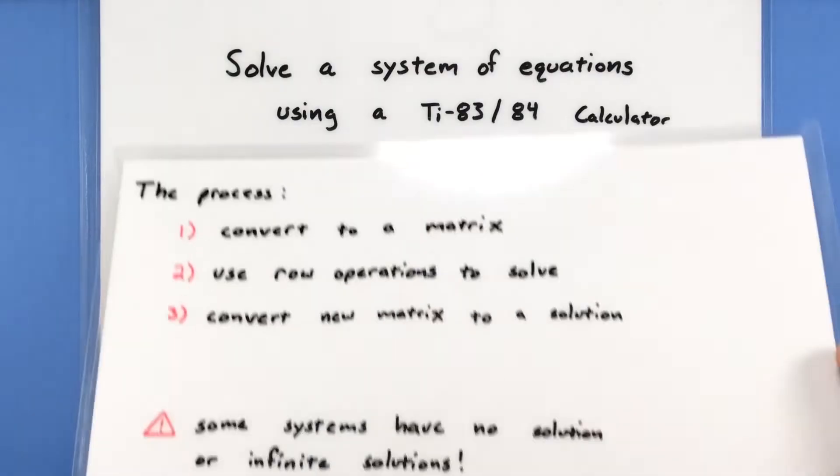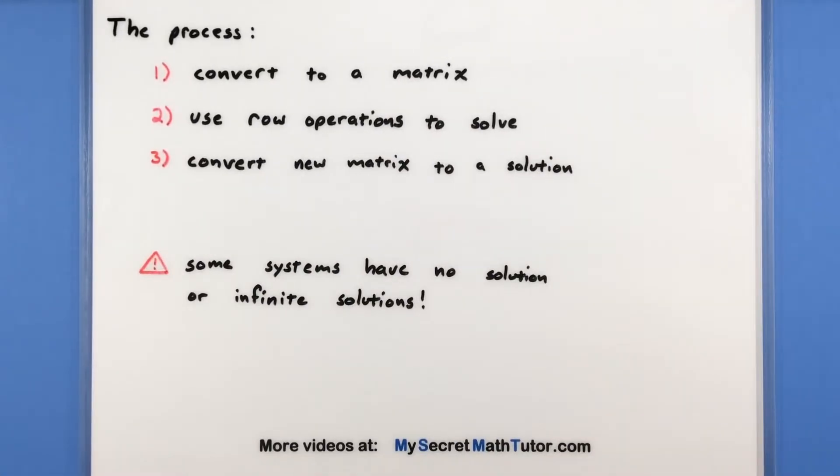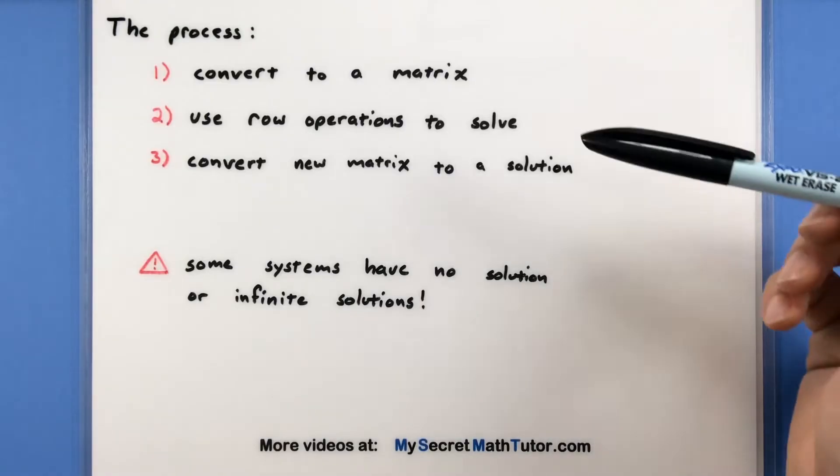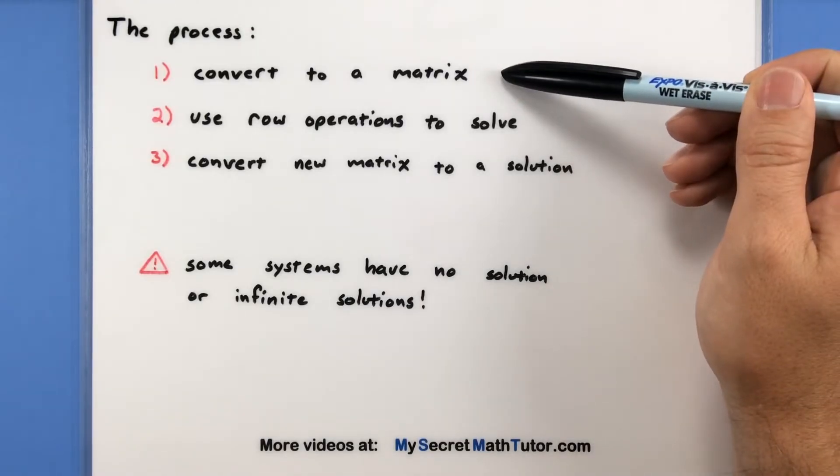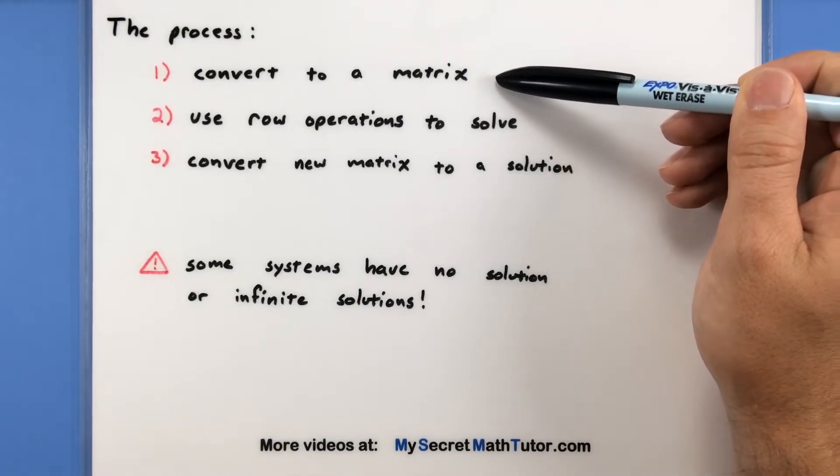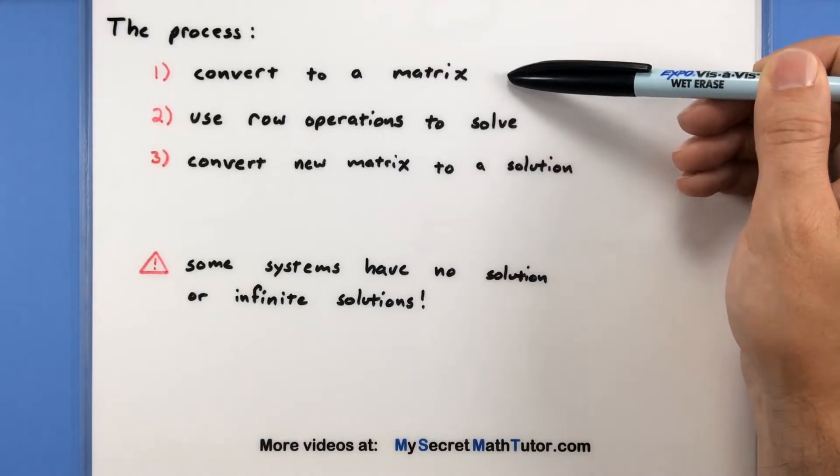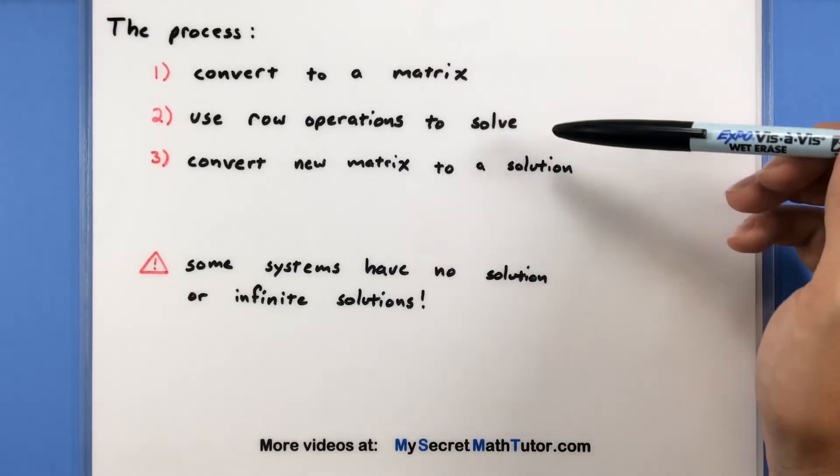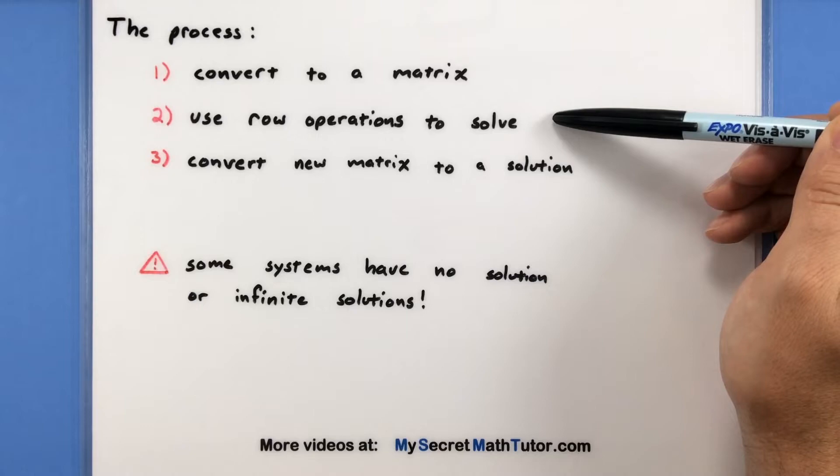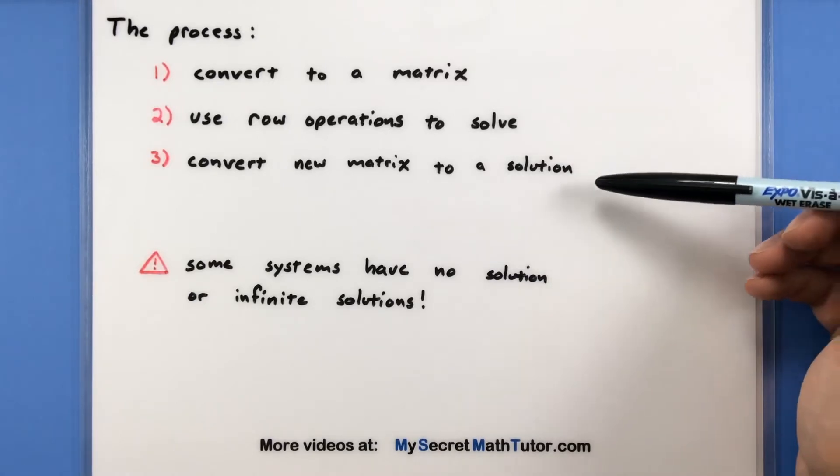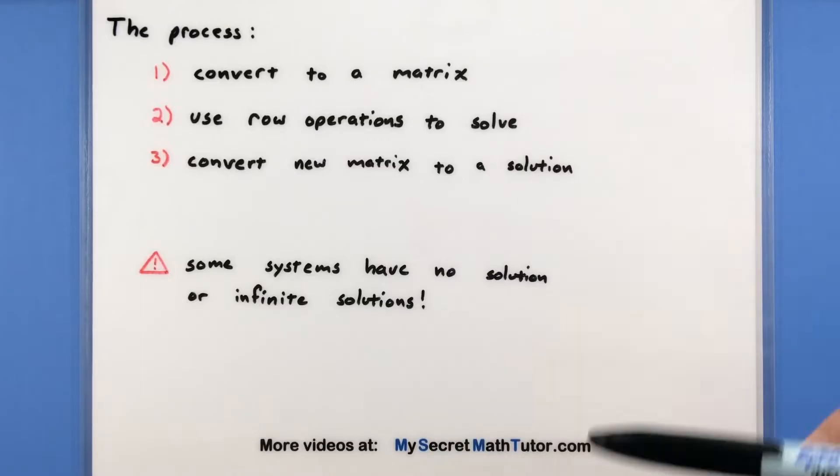If you recall, the process of solving a system of equations using a matrix, or a calculator for that matter, is to convert it into a matrix. This will be handy for the calculator because this is how we have to enter it in. Where the calculator comes in handy is it's going to be doing all of our row operations to make the process nice, easy, and simple. Then we'll look at the resulting matrix and interpret what that solution really means.